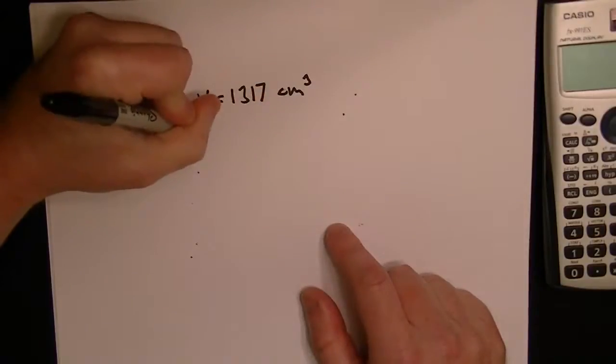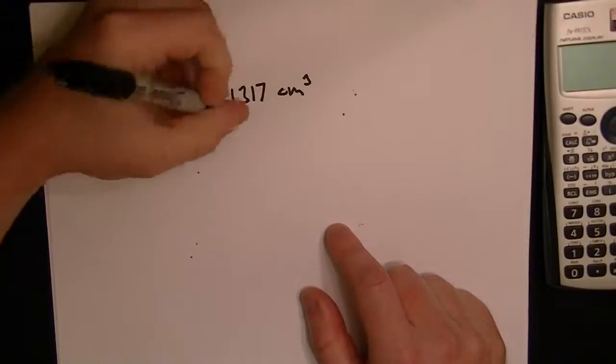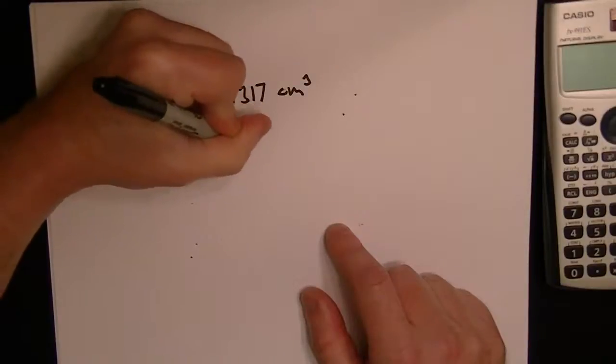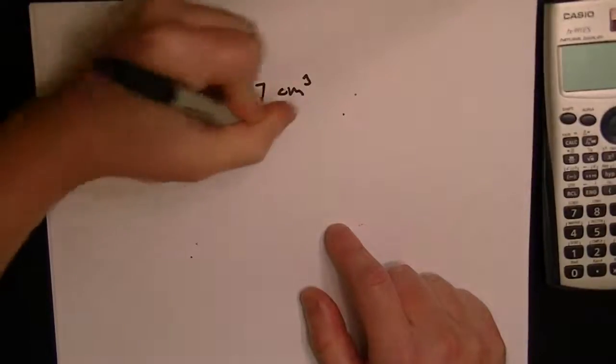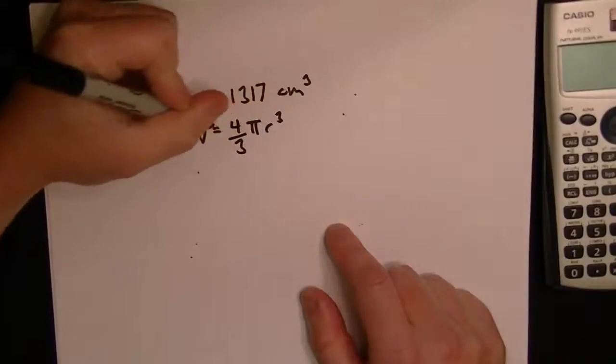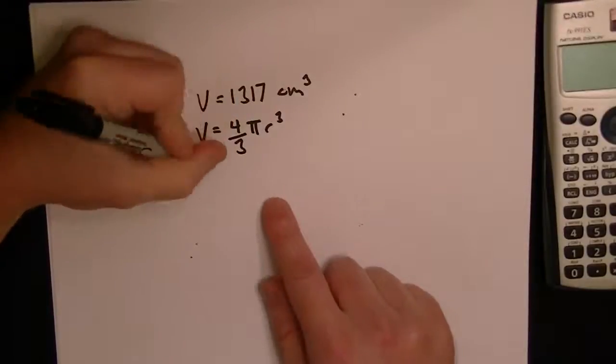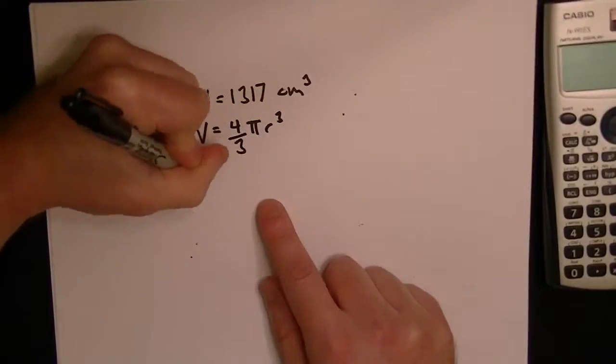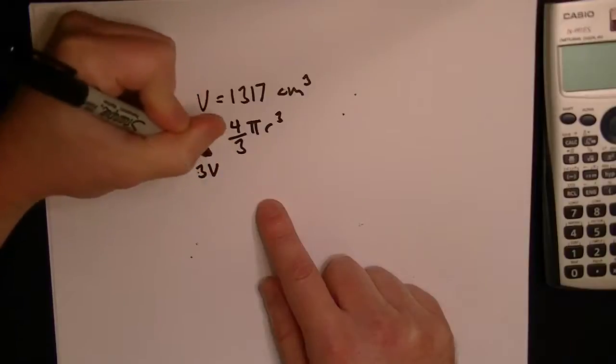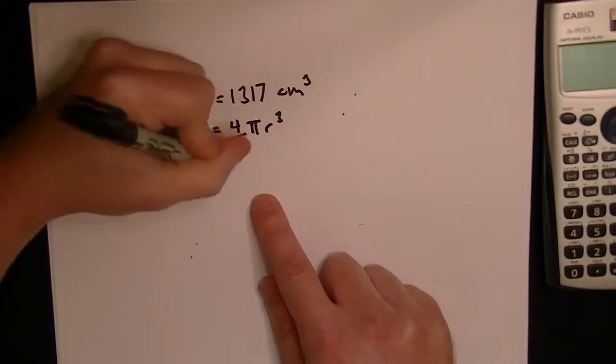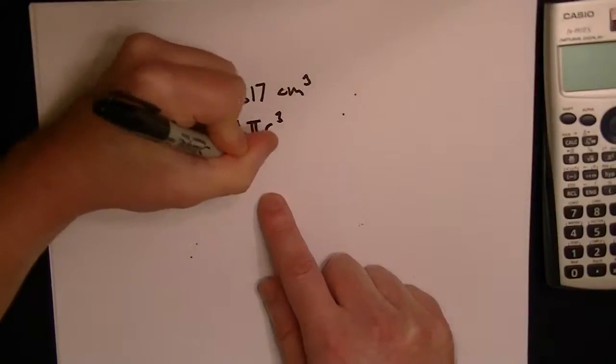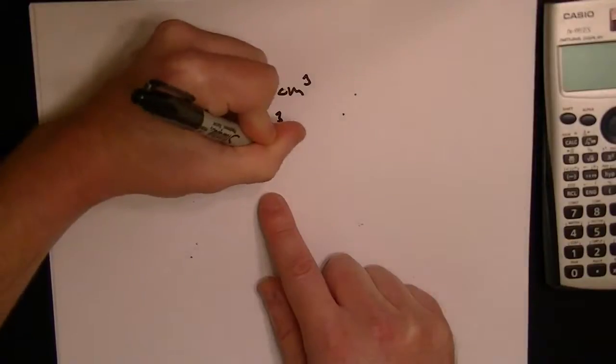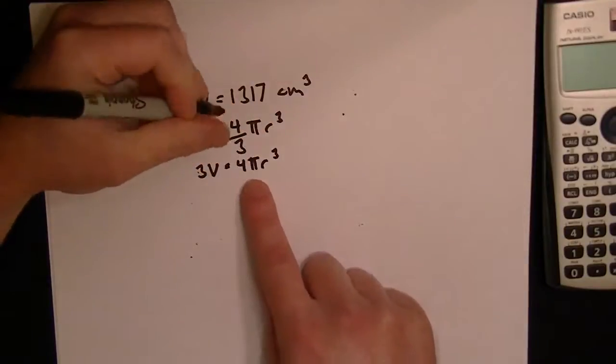You have to know the formula for the volume of the sphere. That's 4 thirds pi times r cubed. To solve for r, you multiply each side by 3, so that will give you 3v equals 4 pi r cubed. I'm just doing this here so you can follow along.